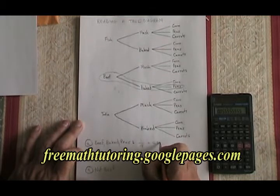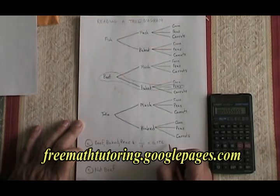Rounded to the nearest thousandth, it would be 0.056. We can also represent the beef, baked potato, and peas in what we call an ordered triad.